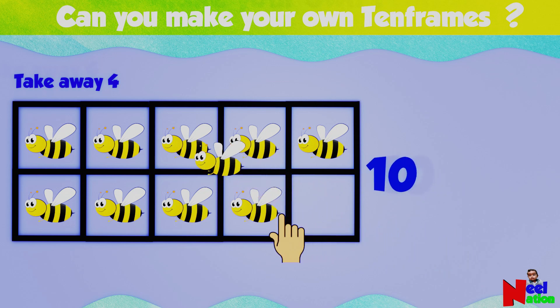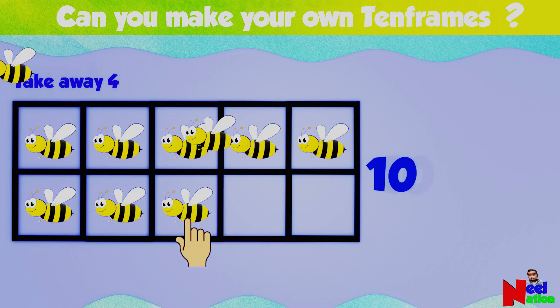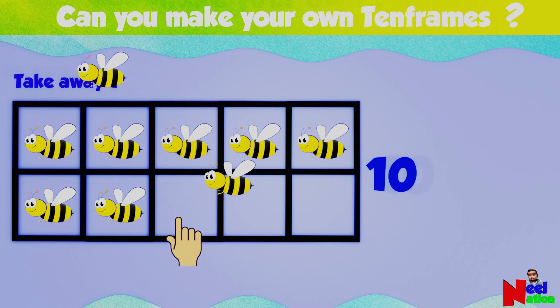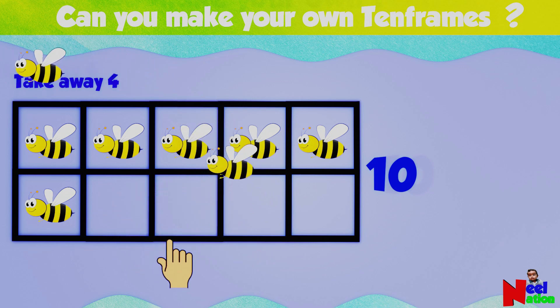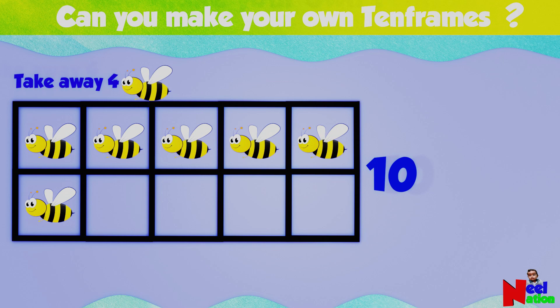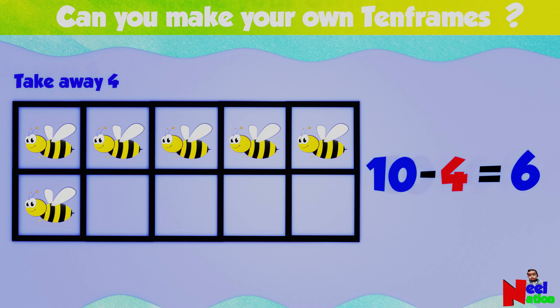Here you have 10 bees. One, two, three, four — four flew away. How many bees are left in the 10 frame? Six bees — that's correct! When you take away four from 10, you get six. Ten minus four equals six.